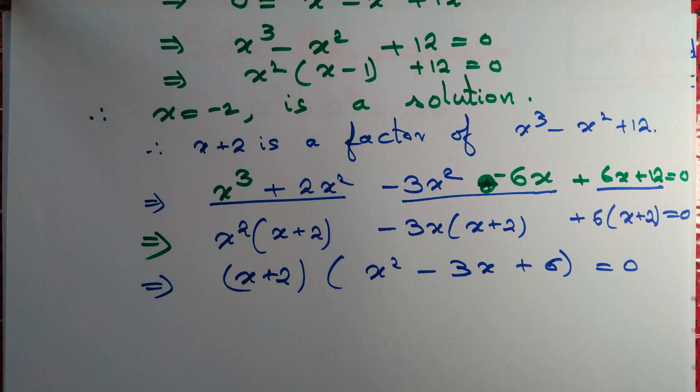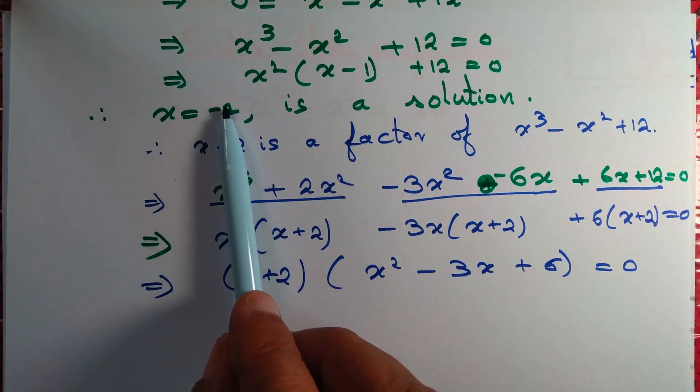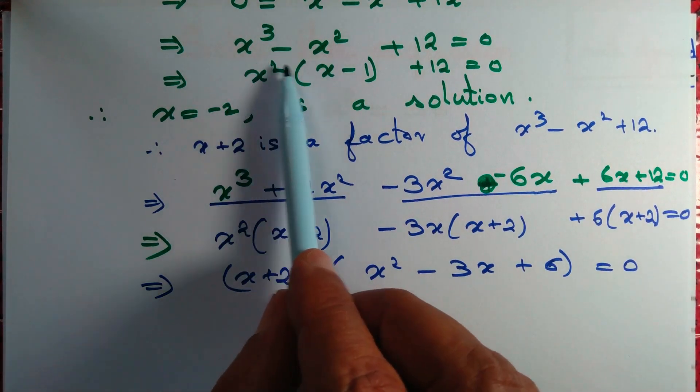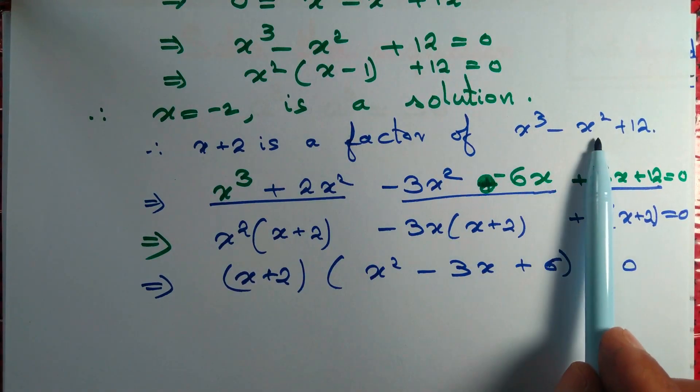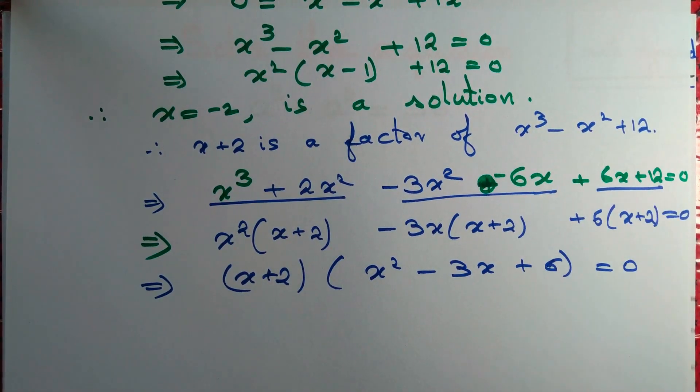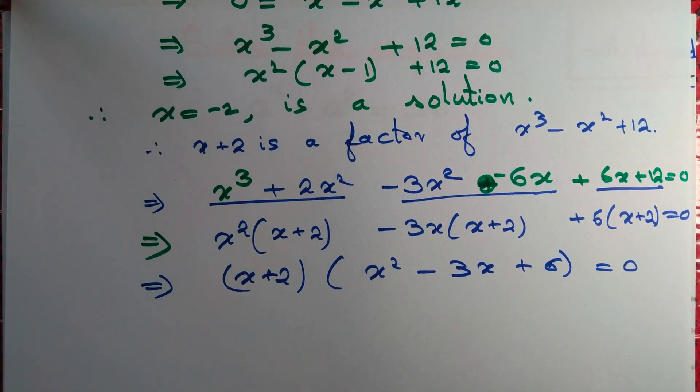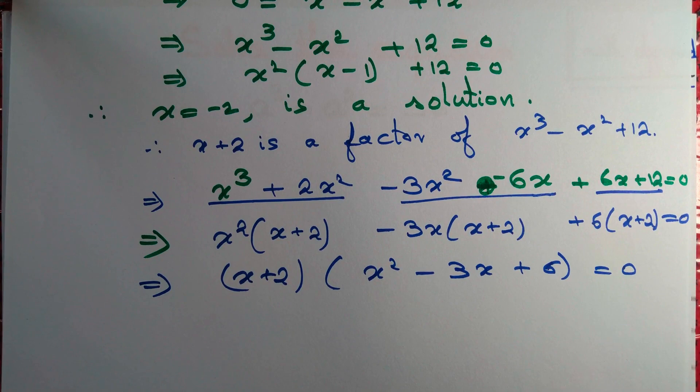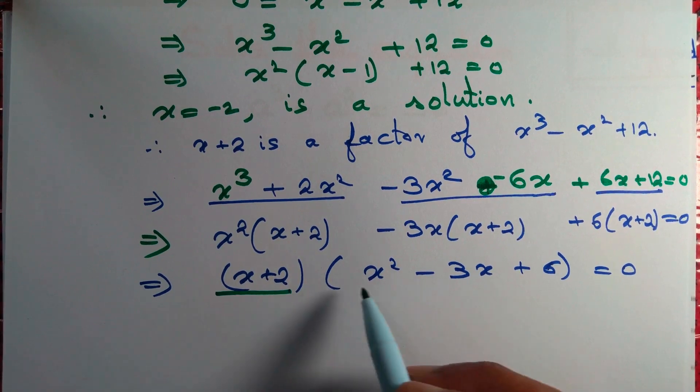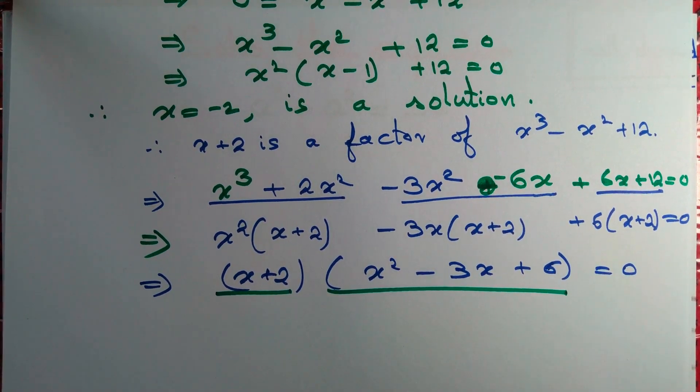As we said earlier, if minus 2 is a root of this equation, then this polynomial x cube minus x square plus 12 must have a factor x plus 2. Now we observe that product of 2 numbers is 0. Once we know that this product is 0, one of them has to be 0. Maybe both of them are 0, but at least one of them has to be 0.